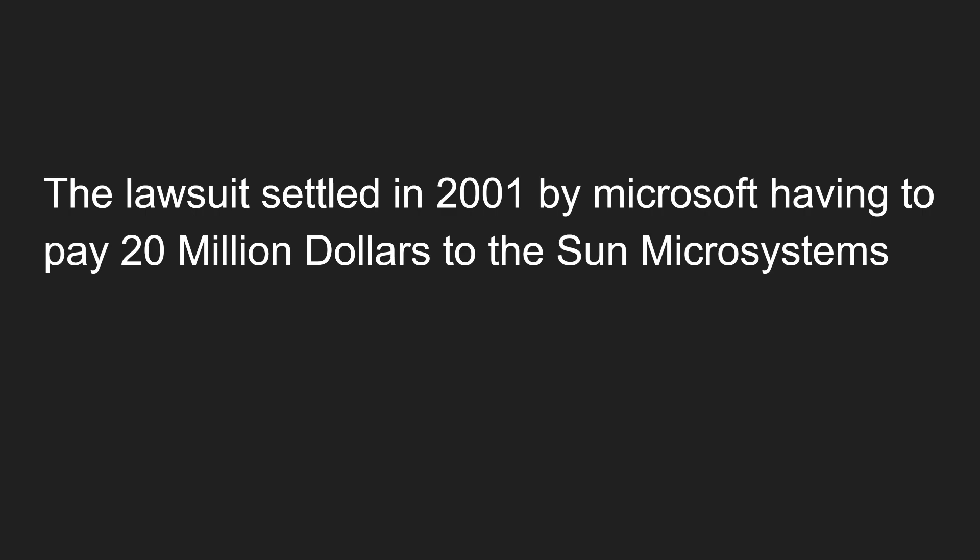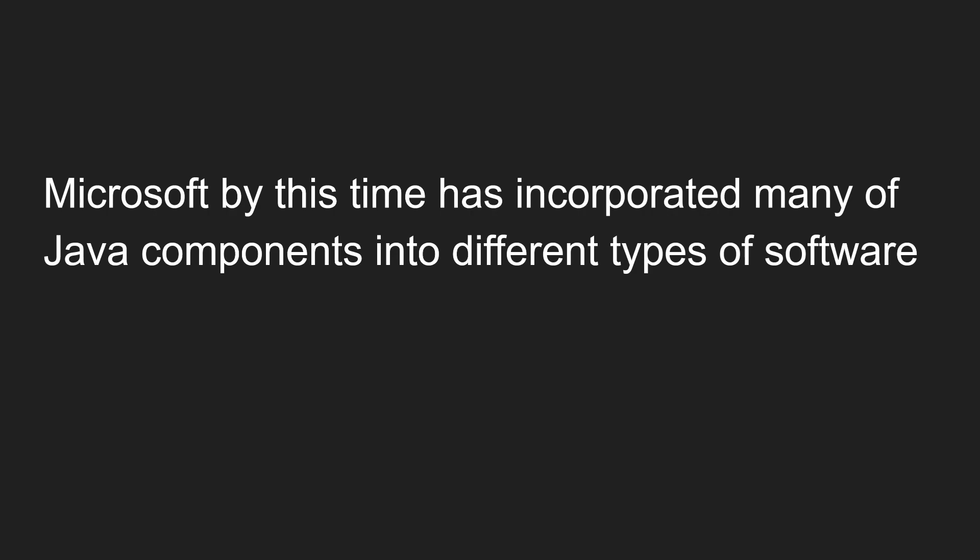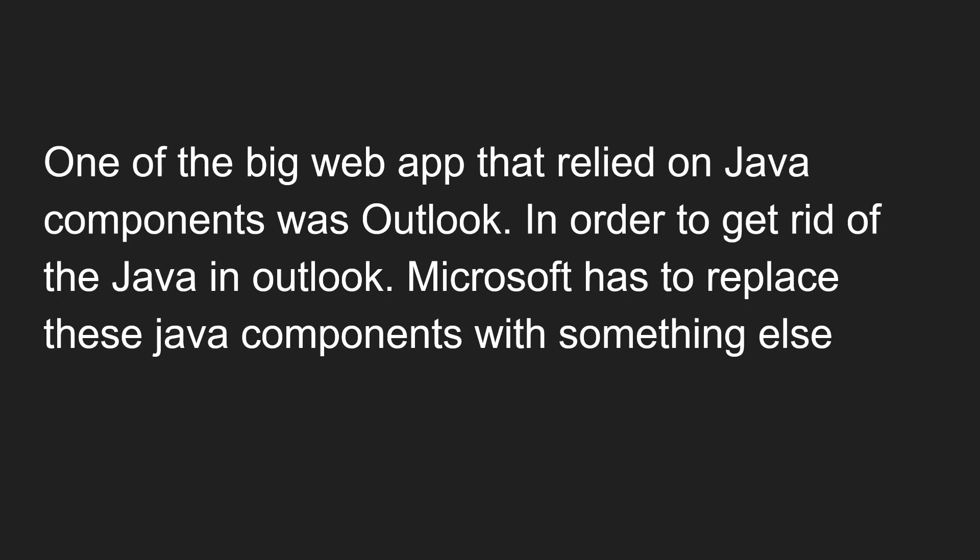Microsoft agreed to slowly phase out the Java Virtual Machine from their products. That is why, when Windows XP was introduced, you needed to install the Java Virtual Machine separately — it was no longer included by default. Before Windows XP, the JVM was bundled with Windows by default, but after XP you had to install the appropriate executable file separately.